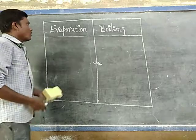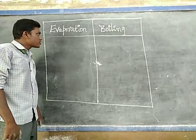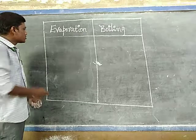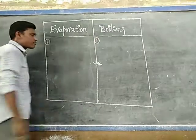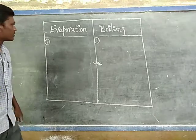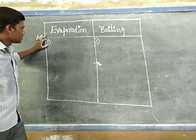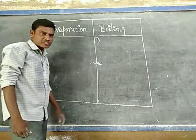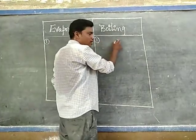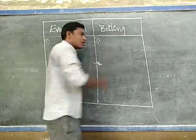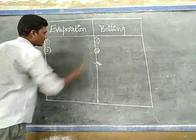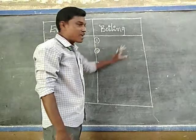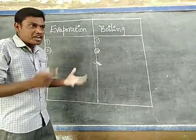Next: what are the differences between evaporation and boiling? This is very important for four-mark or two-mark questions. Five differences: First — evaporation is the process of surface molecules converting to the vapor phase; boiling is the process of the entire liquid phase changing into the gaseous phase. Second — evaporation is a surface phenomenon; boiling is a bulk phenomenon, because not only the surface but the entire liquid converts.